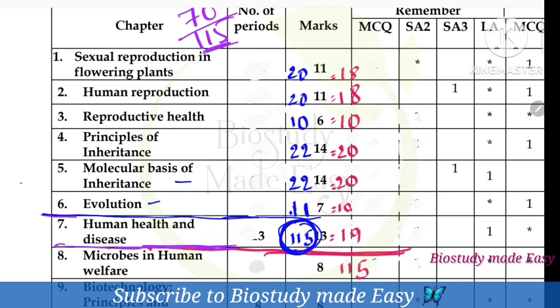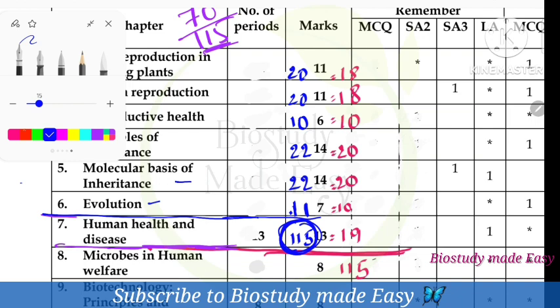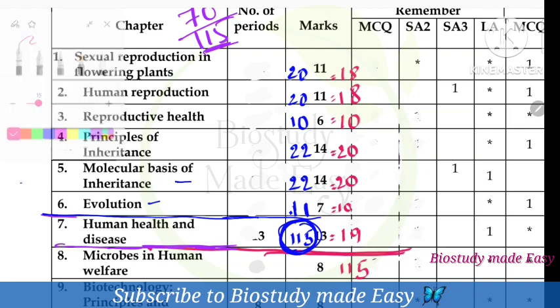This is the weightage for the evolution chapter and the human health and diseases chapter. We have to calculate the weightage on average — these marks exactly. 115 marks total.